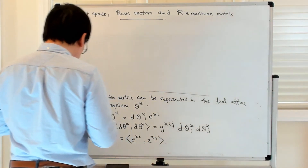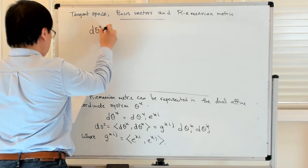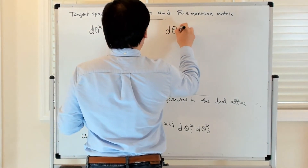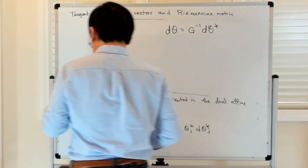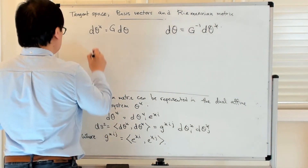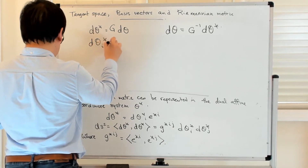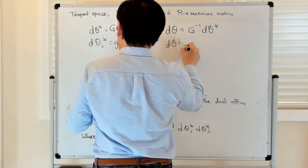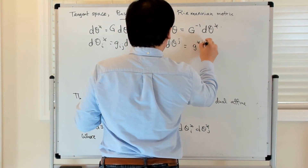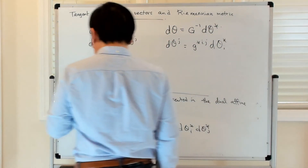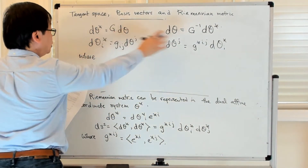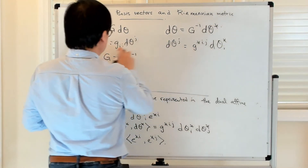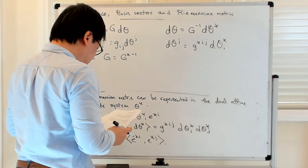We know how the two coordinate systems are related: dθ* = G dθ and dθ = G⁻¹ dθ*. More specifically, dθ*_i = g_ij dθ^j, and dθ^j = g*^ij dθ*_i. These big G and G-inverse matrices are related by G = (G*)⁻¹ — the two Riemannian metric tensors are mutually inverse.